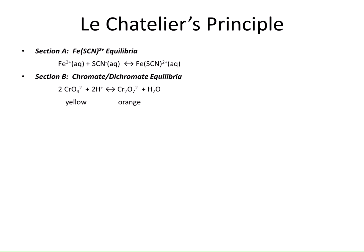The second system we'll be looking at is a chromate/dichromate equilibrium. The chromate, CrO₄²⁻, is a yellow complex, and the dichromate, Cr₂O₇²⁻, is an orange complex. We'll be adding acids and bases to the system to see how those affect the equilibria.